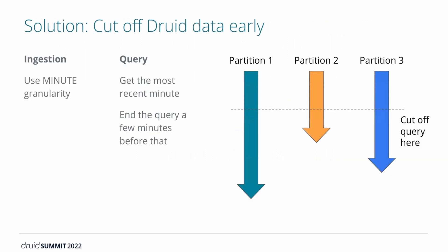We handle this by cutting off the Druid query a few minutes early. When ingesting from Kafka into Druid we use minute query granularity. When querying, we do two steps: first, get the most recent minute that has any data in Druid; then, instead of ending the query at that minute, we end it a few minutes before. This ensures that all minutes up until the last queried minute have complete data from all partitions — it's not incomplete.